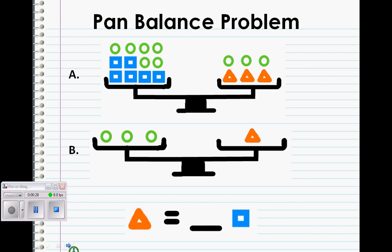So here's our problem. Six circles and six squares is equal to three circles and three triangles. The second clue is telling us that three circles is equal to one triangle. What we are trying to find out is how many squares equals one triangle.